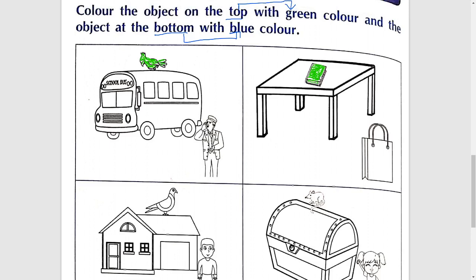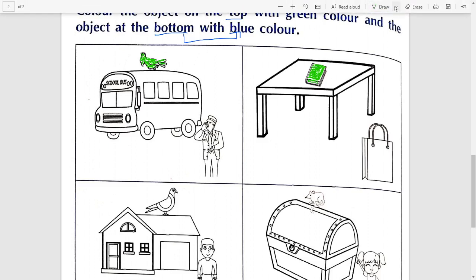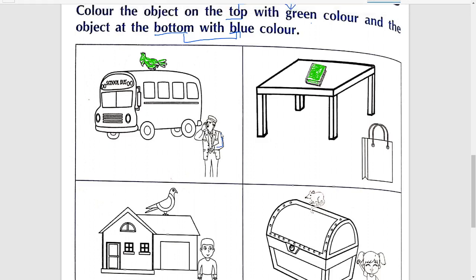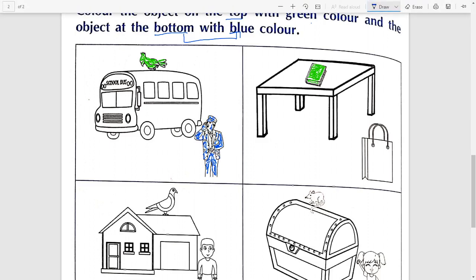Okay students, यह तो हुए आपके top objects। अब जो bottom है उसके लिए blue color लेंगे। जो वस्तु bottom पर है यानि तल पर है उसको blue color करेंगे। पहले box में आपका man है, और second box में जो bottom पर है उसको आप blue करेंगे।